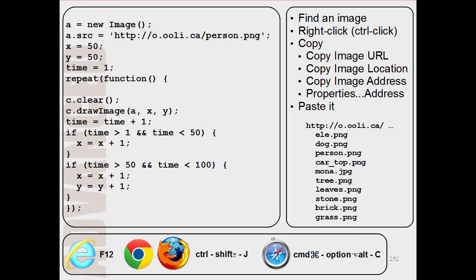So here's the complete program for moving the person to the right and then down and to the right. So now you can build on this to build more complicated programs for moving images in more complicated and interesting ways. Go give it a try!